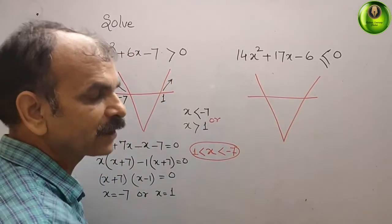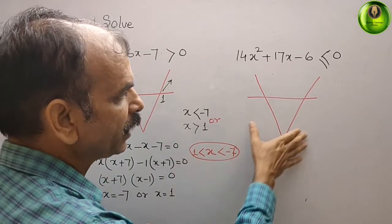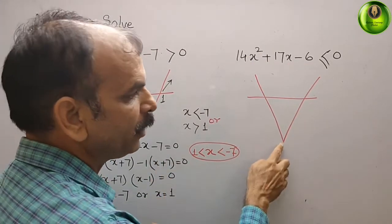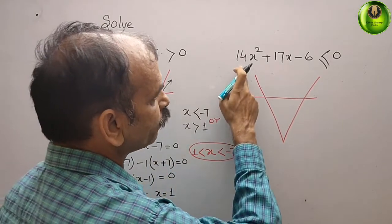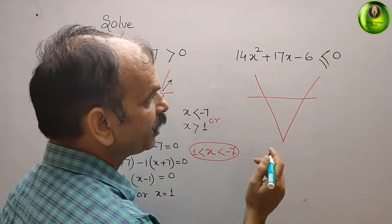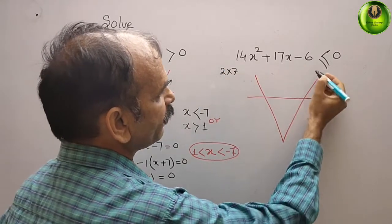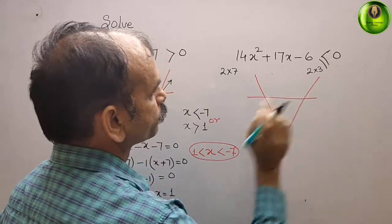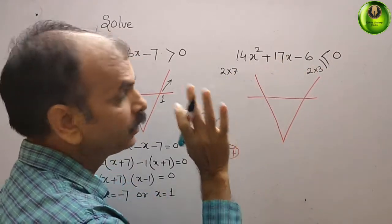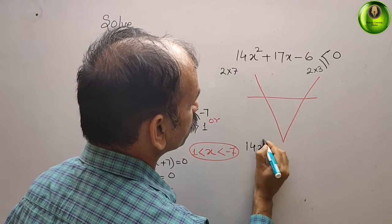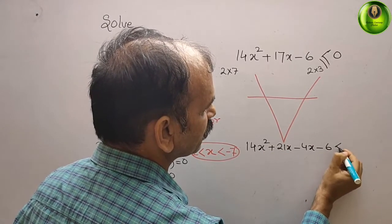Now for the second question: 14x² + 17x - 6 ≤ 0. The coefficient of x² is positive, so the parabola has a minimum point opening upward. For middle term splitting: 14 = 2 × 7, and 6 factors as 2 × 3. We need 7 × 3 = 21 and 21 - 4 = 17. So we write 14x² + 21x - 4x - 6 = 0.